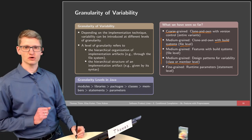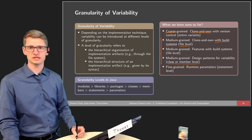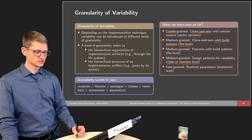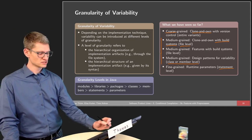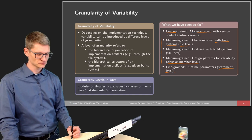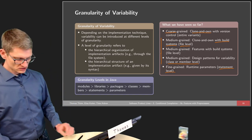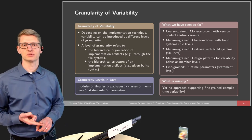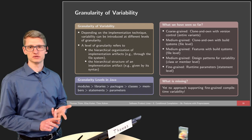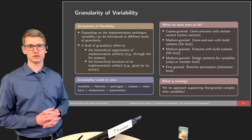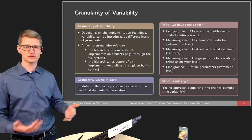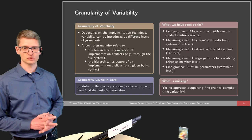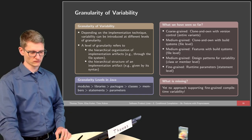We have seen fine-grained variability already with the first technique: runtime parameters or runtime options, where we can have even statement-level variability. But what is missing is an approach that supports fine-grained variability and compile-time variability at the same time. The other techniques are typically more coarse-grained options.